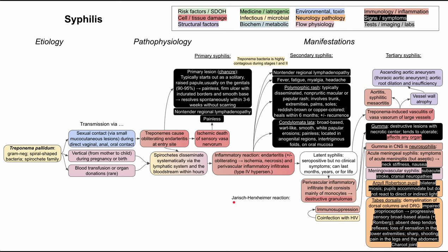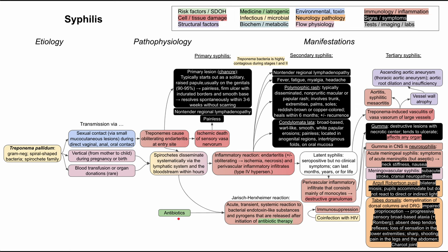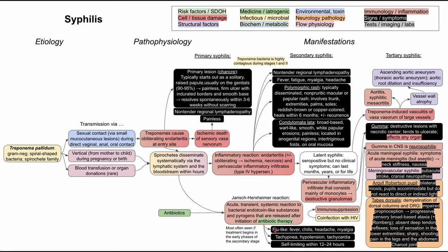Lastly, it's worth discussing the Jarisch-Herxheimer reaction. This is a reaction you get from spirochetes disseminated throughout the body when you start antibiotic treatment for syphilis. It's an acute transient systemic response to a bacterial endotoxin-like substance and pyrogens released after starting antibiotics, and it's most often seen when you start antibiotics in the early phases of secondary syphilis. Symptoms can be flu-like — fever, chills, headaches, myalgias — and you can have tachypnea, hypotension, and tachycardia. This reaction is typically self-limiting within 12 to 24 hours, and you'll usually provide supportive care like NSAIDs.